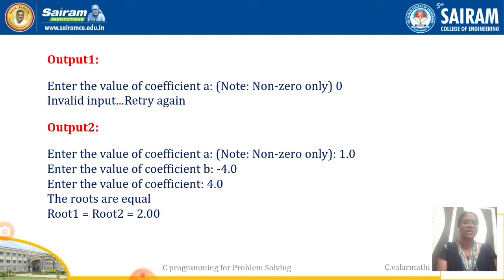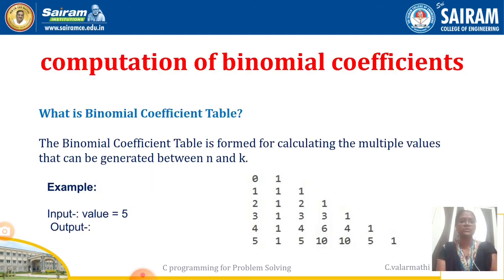Coming to the output: the first time, giving the value of coefficient a equal to 0. In that condition, since we already have the test condition that if a equals 0 it shows invalid input, try again. For the second output, giving real values 1, -4, and 4 — the roots are equal: root1 and root2 are both 2, because it comes under the category of disc equal to 0. Likewise you will get the outputs.